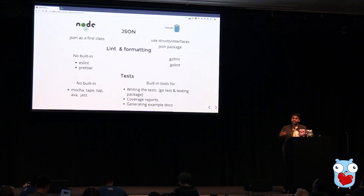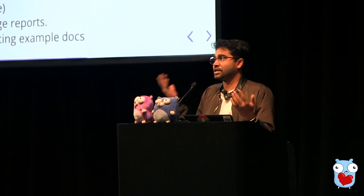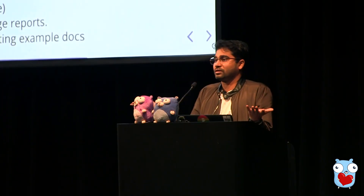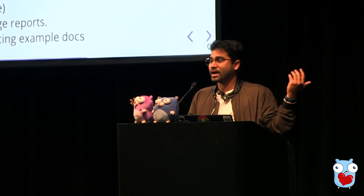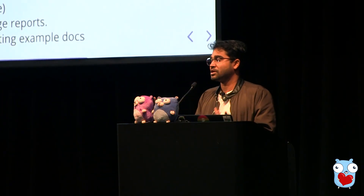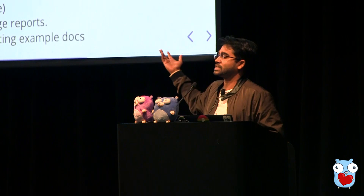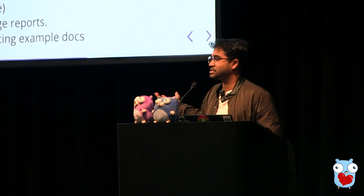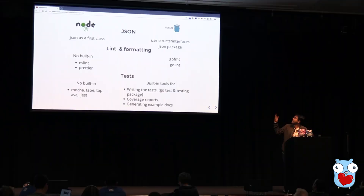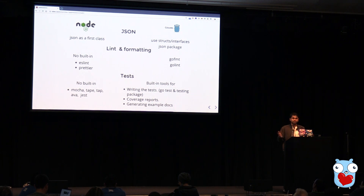Another thing I worked with on that project was JSON. JSON was originally meant for JavaScript, so in Node.js and JavaScript it has first-class support. In Golang, you can work with it using structs and interfaces with the help of the JSON package.